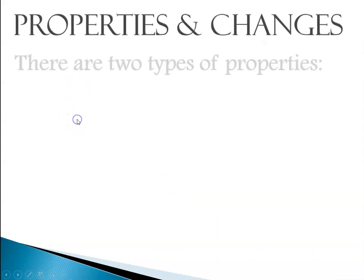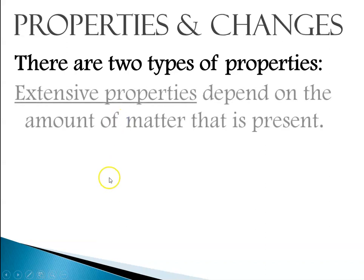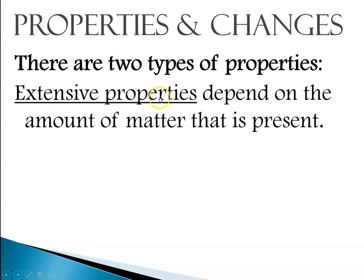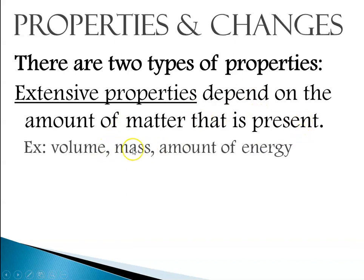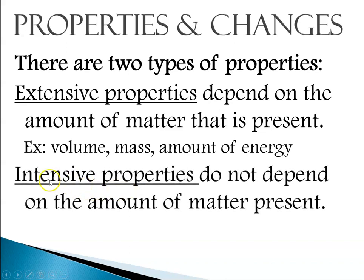So there are two types of properties that we talk about. The first are extensive properties, and they depend on the amount of matter that is present. So if I'm measuring volume or mass, they're going to change depending on how much is present. There are other kinds of properties that don't depend on the amount that's present, and those are the so-called intensive properties.